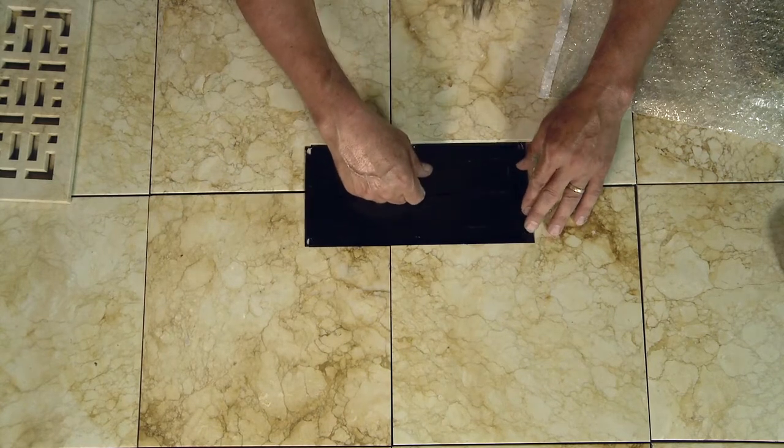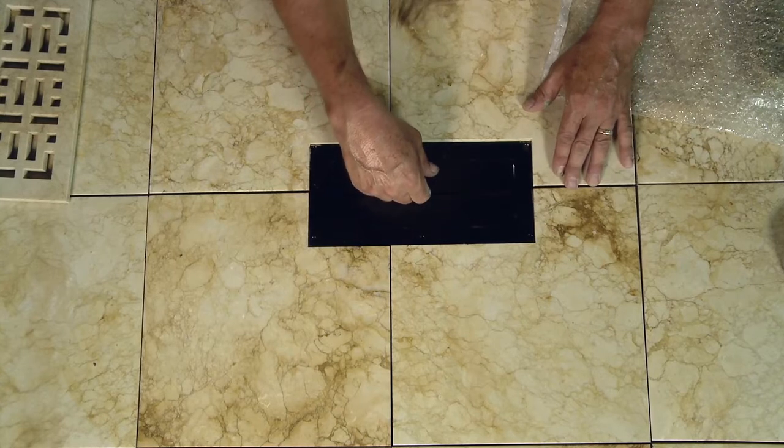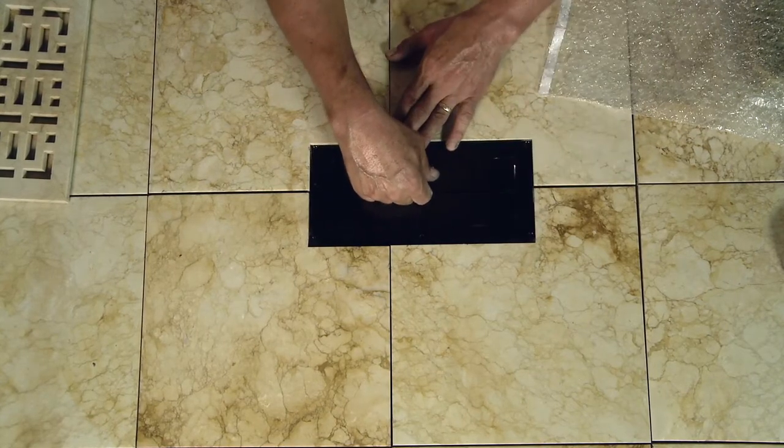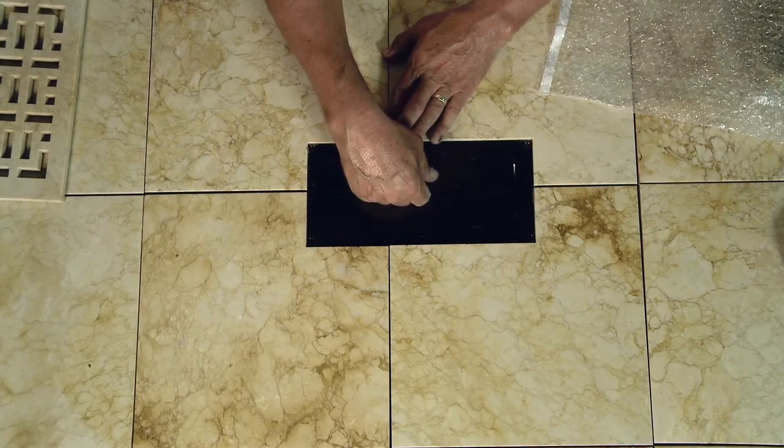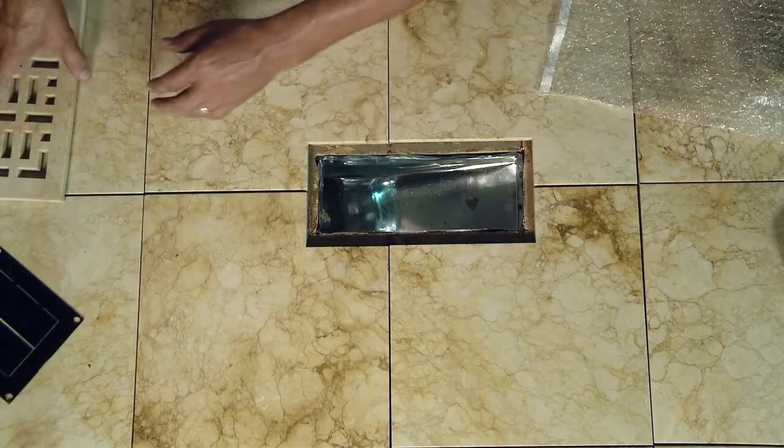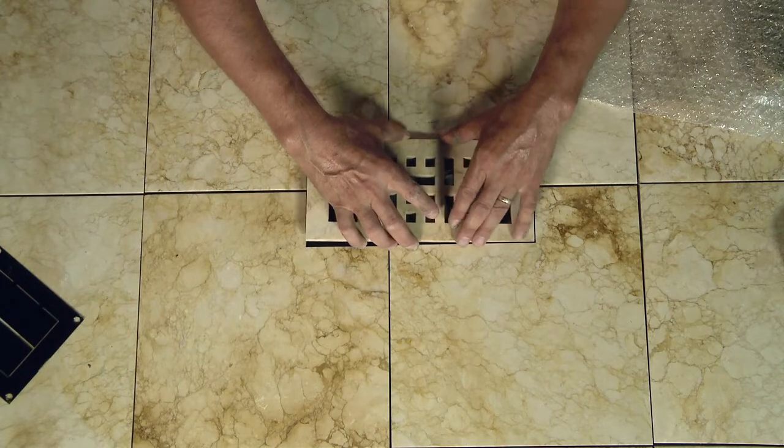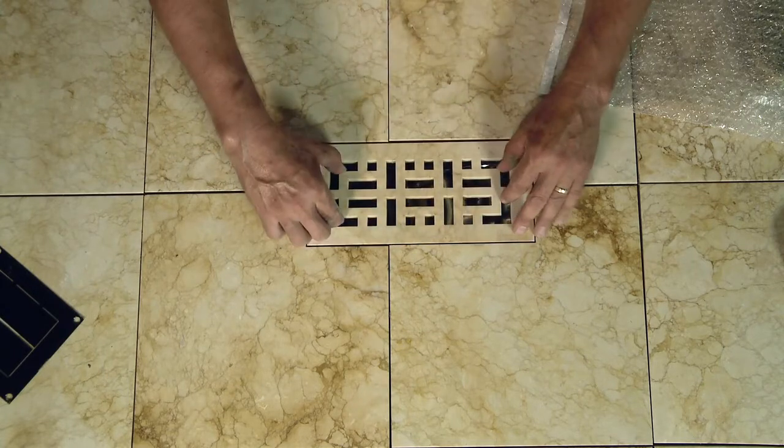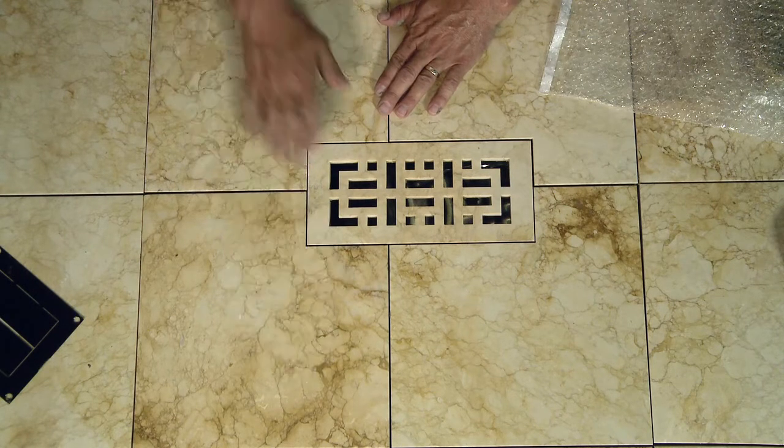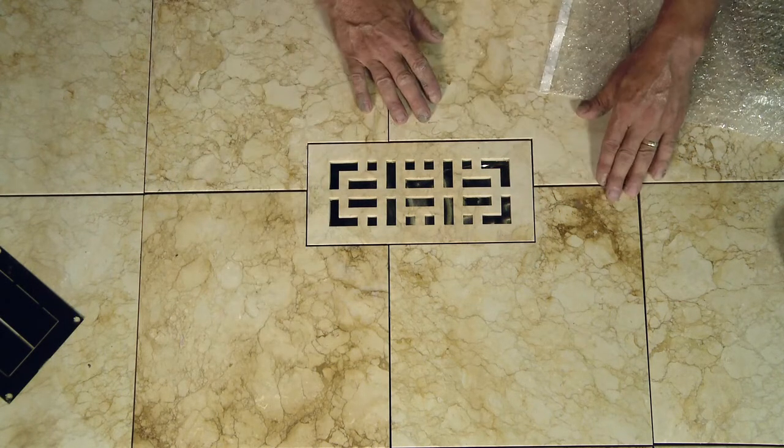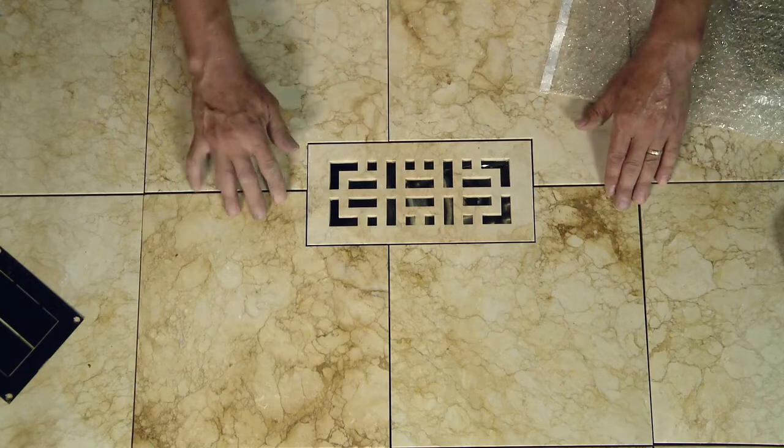The diffuser plate should go in and out without any obstruction. You can temporarily insert the vent just to ensure that everything is square. The joint looks good.